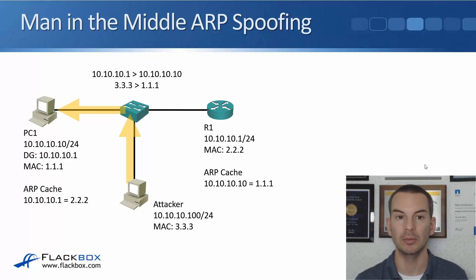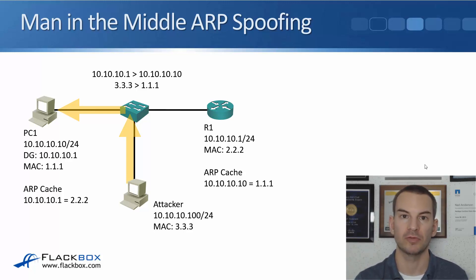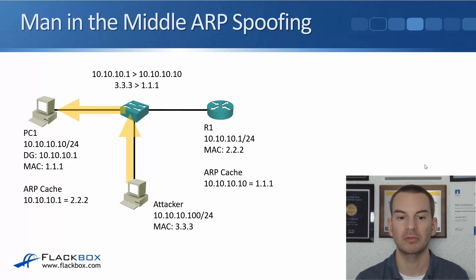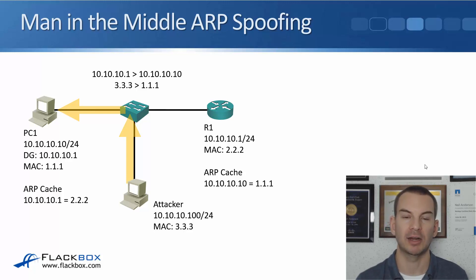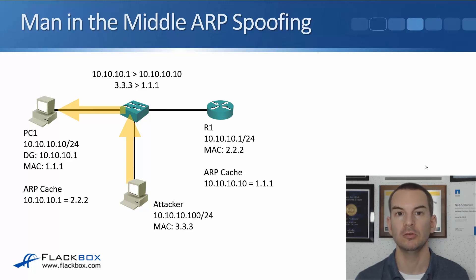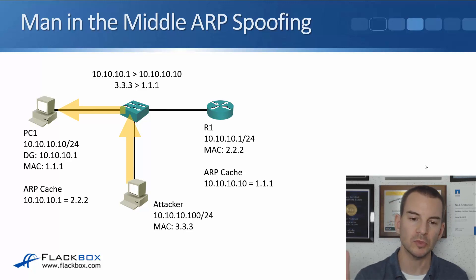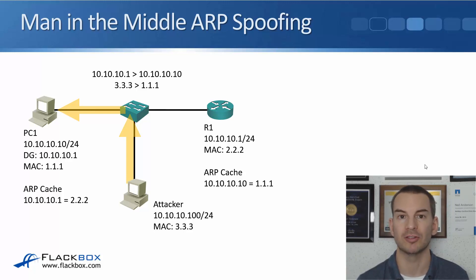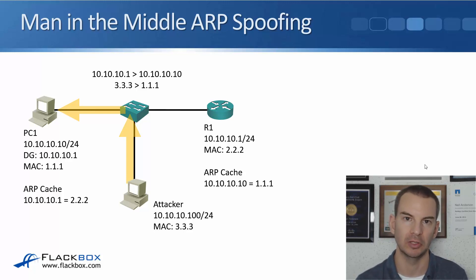If the attacker isn't able to poison both sides for a full man-in-the-middle, this can also be used for a denial-of-service attack — rather than forwarding the traffic onto the router, the attacker simply drops it. So ARP spoofing can be used for man-in-the-middle sniffing or denial-of-service. This is usually a malicious attack, and the attacker can use a tool such as Cain and Abel, which is very easy to use to carry out this kind of attack.